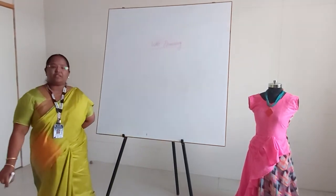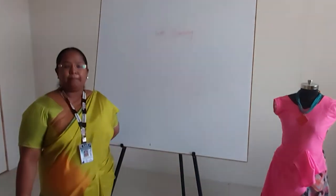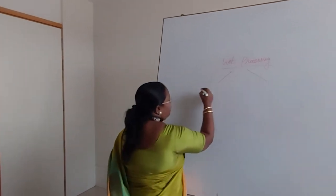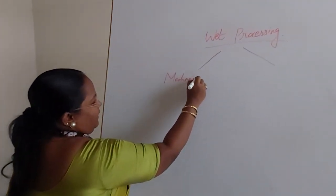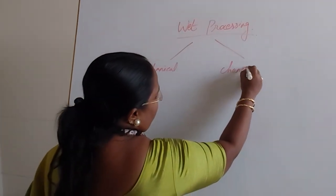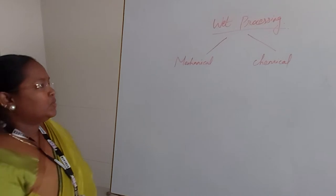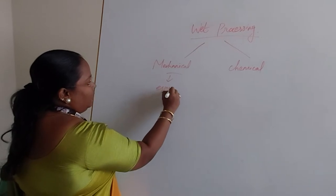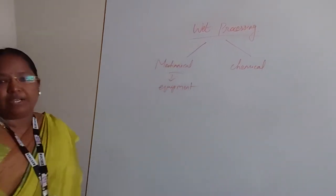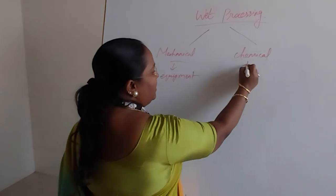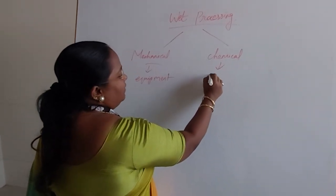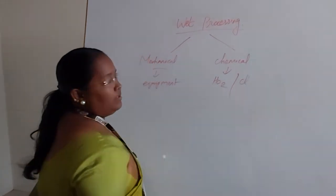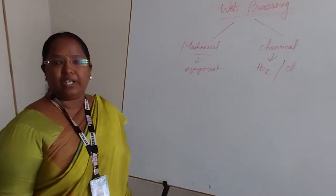So what is wet processing? Wet processing involves treatments done by using mechanical and chemical methods. Mechanical treatment is when you are using only instruments or equipment. When you are using some chemicals and applying finishing, then it is called chemical finishes — for example, water or chlorine. Likewise, we can introduce any chemical treatments to the entire fabric.